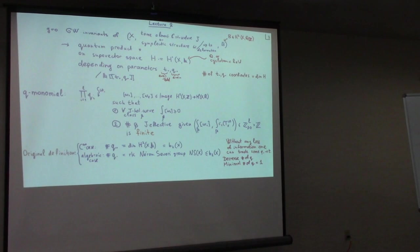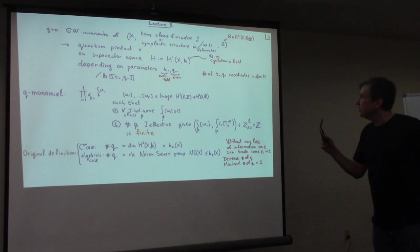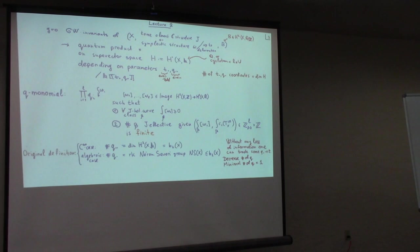So I get this product, and the product will be not one product, but depending on many, many parameters. The number of parameters is the dimension of cohomology, or the rational coefficient of my space. Parameters are of two types: variable T, which could be even or odd, corresponding to even or odd part of homology, and Q, which corresponds to H2.